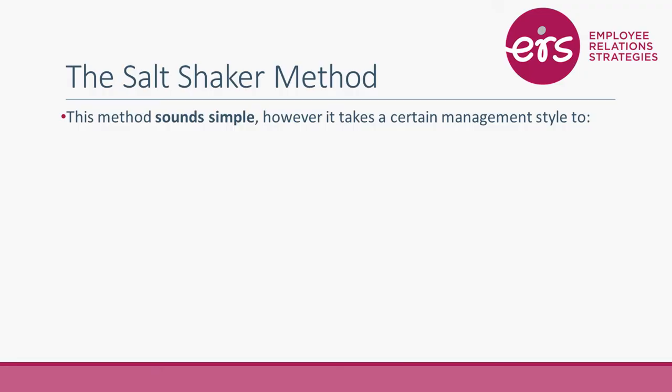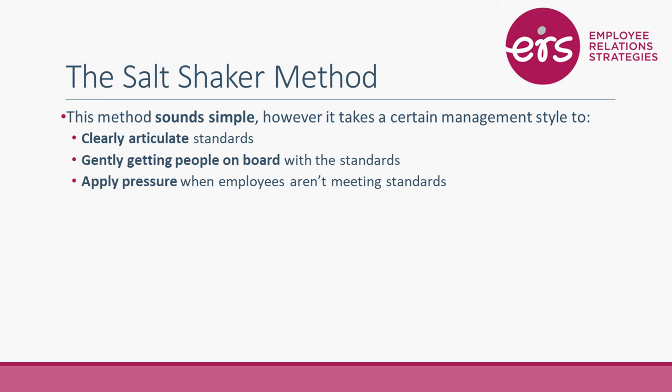If you let people know what the acceptable standard is, 99% of the time people will follow it. If they don't, it's a much easier conversation because you can reference all the prior discussions you've had. It's no surprise to them when you do have to take action. So tying it all together — constant gentle pressure sounds simple, but most people struggle because it takes a certain leadership style to clearly articulate your standards and get people on board.